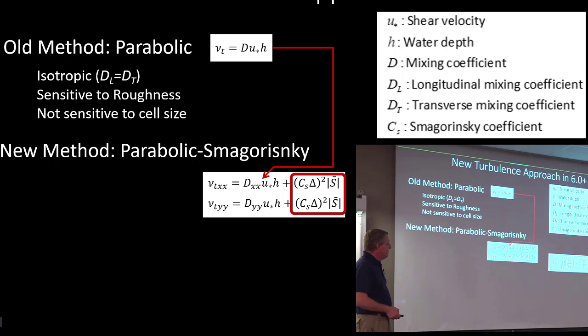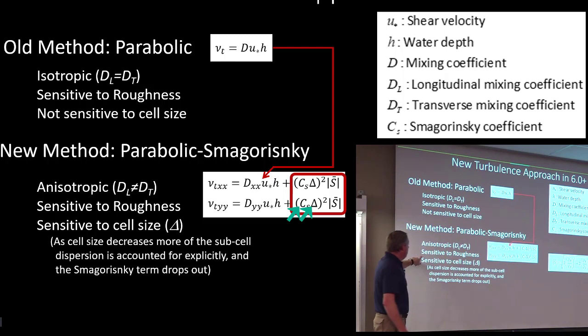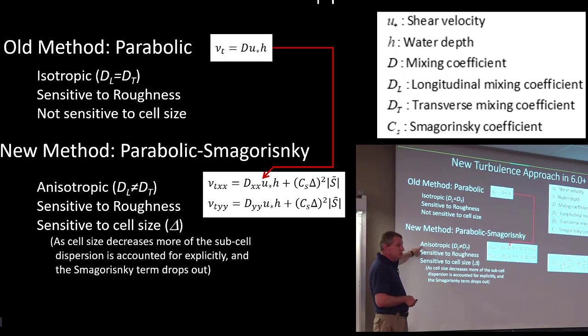The next thing he did is he added the Smagorinsky term, where this is the Smagorinsky coefficient, and this is the cell size. Well, now it's still sensitive to roughness, but that's not Smagorinsky. That's just the parabolic method. It's anisotropic, which is better. Now it's sensitive to cell size. Does that make sense?